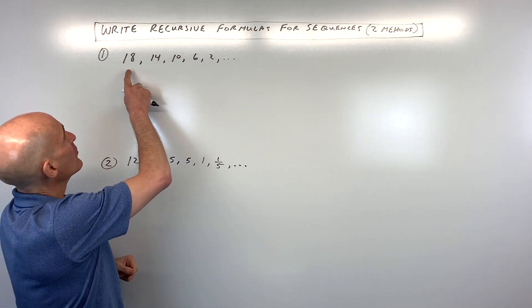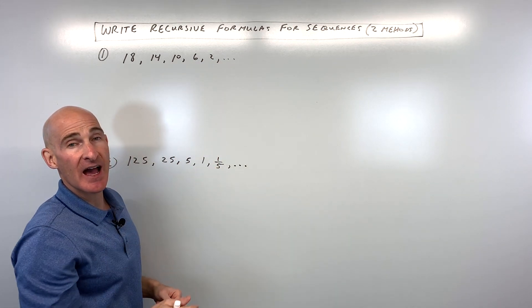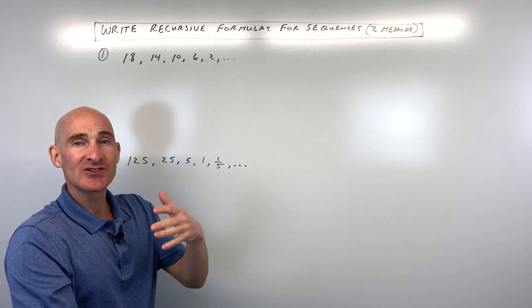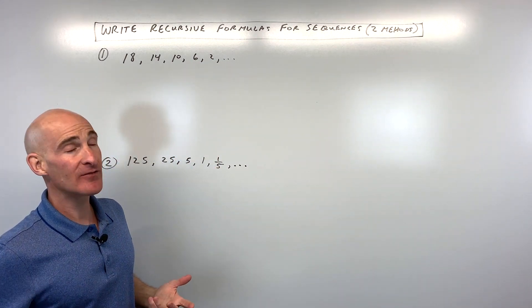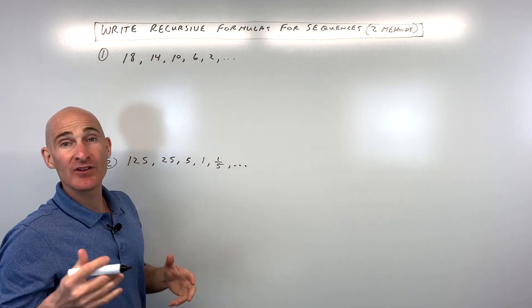So for number one, what's the pattern here? We're going from 18 to 14 to 10 to 6 to 2... How are we getting to the next term in this sequence or in this list of numbers? Well, if you said that you're subtracting four each time, you're absolutely right.